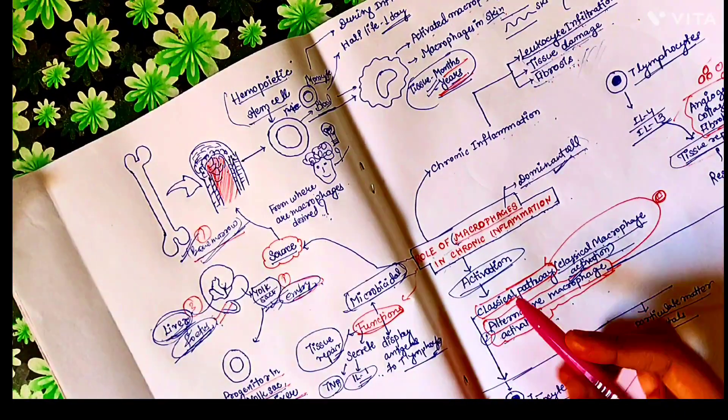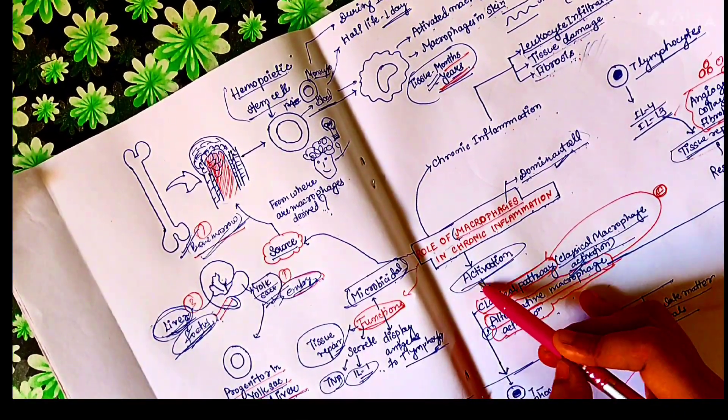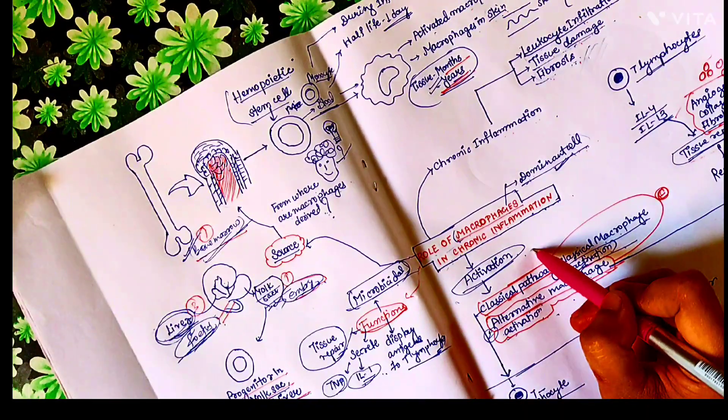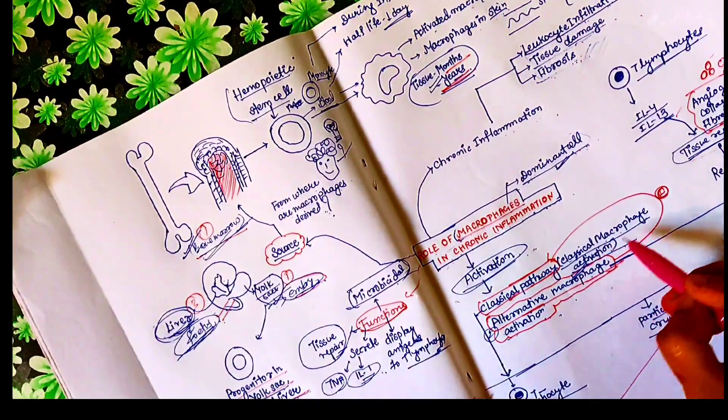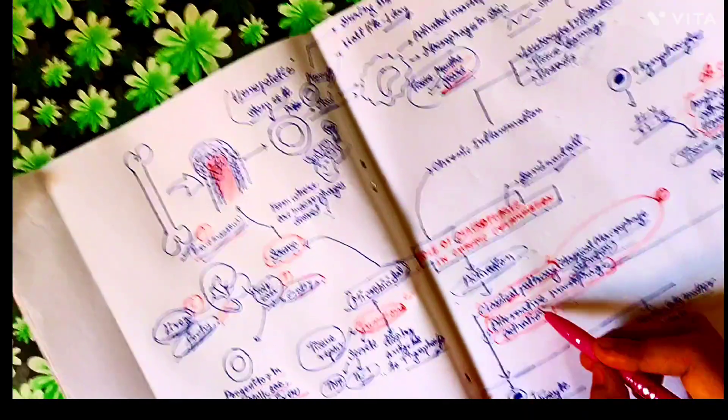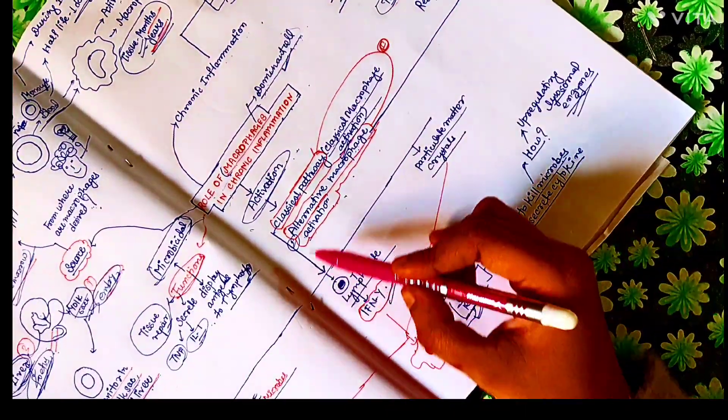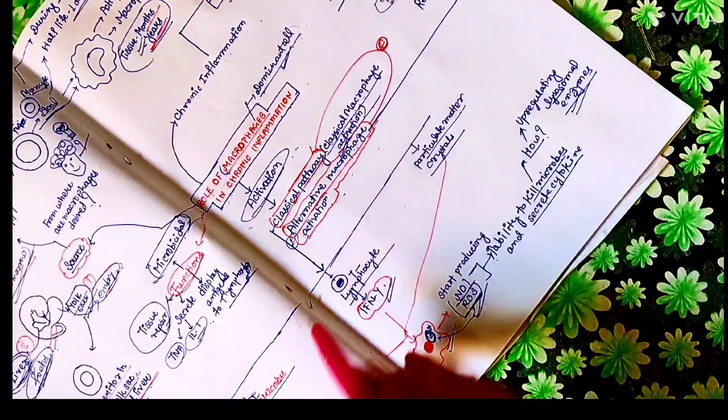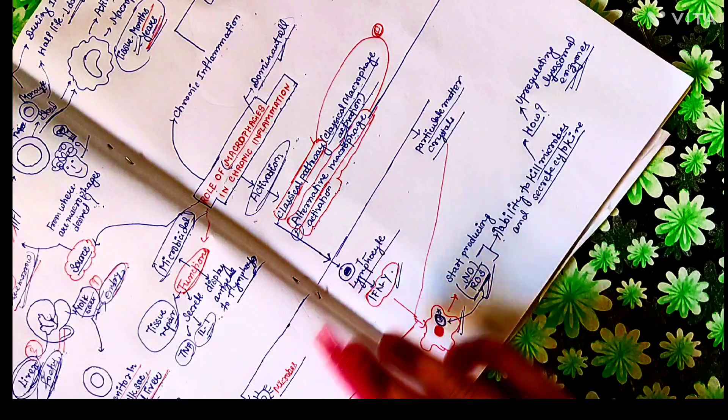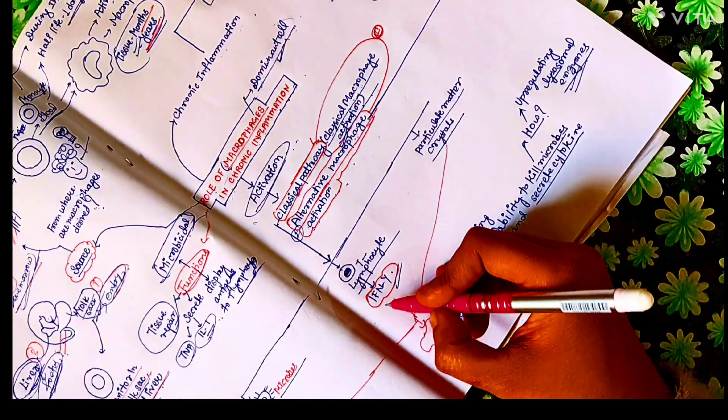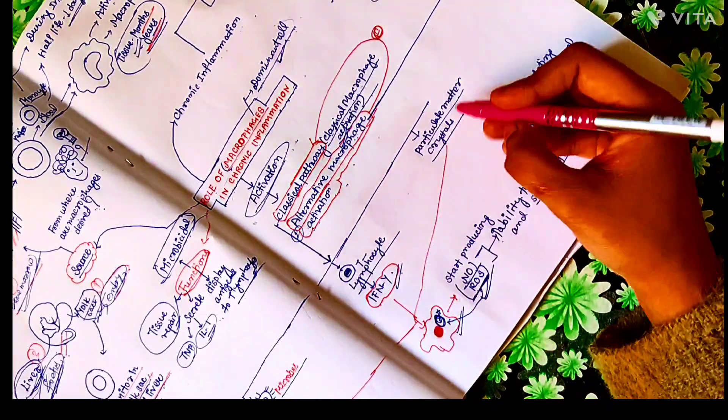To play a role in chronic inflammation, they need to be activated. And there are two pathways for activation of macrophages. First is classical macrophage activation pathway. And second is alternative macrophage activation pathway. Let's begin by studying about the classical pathway. So classically, they are activated either due to endotoxins or due to interferon gamma or particulate matter and crystals.